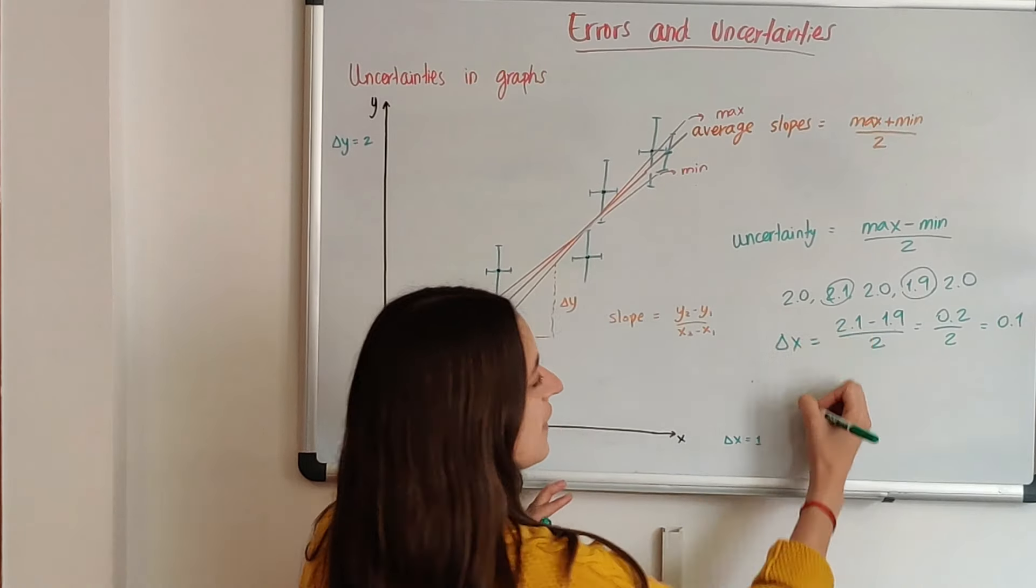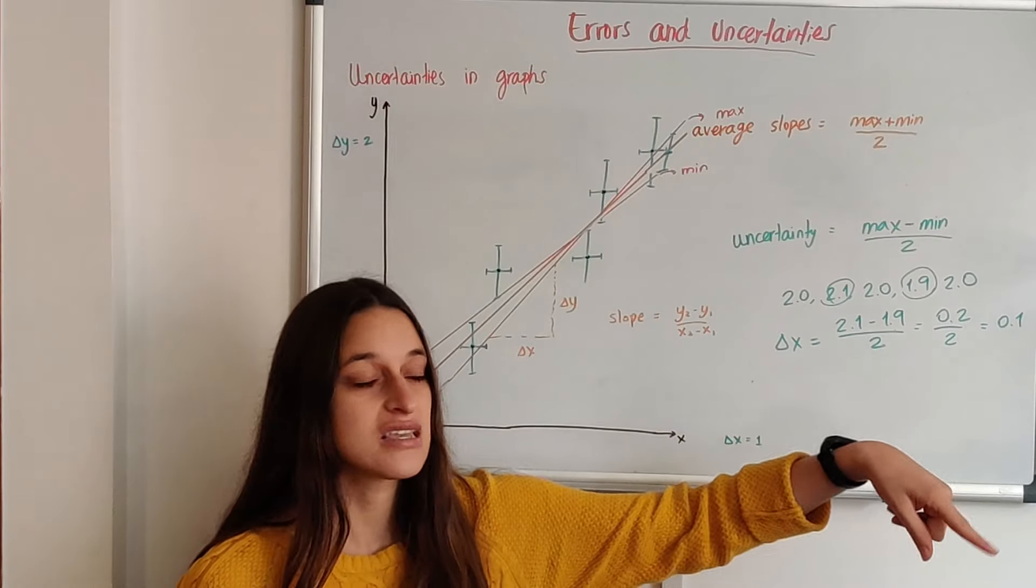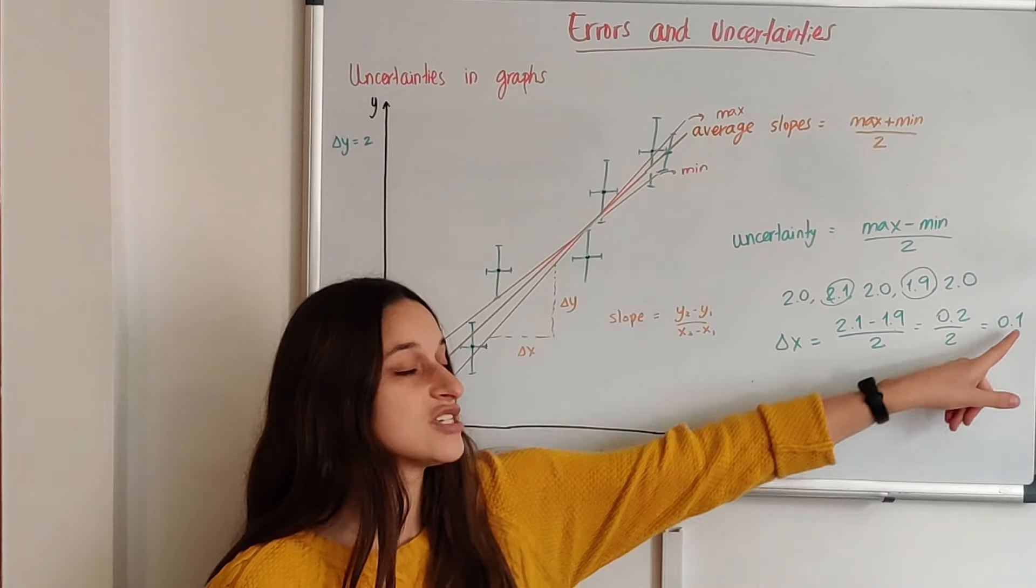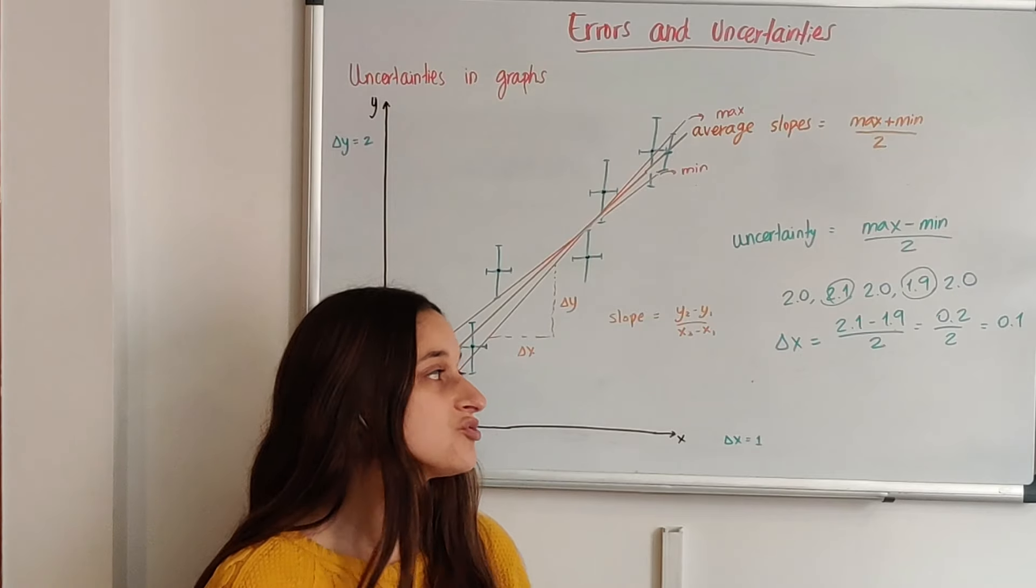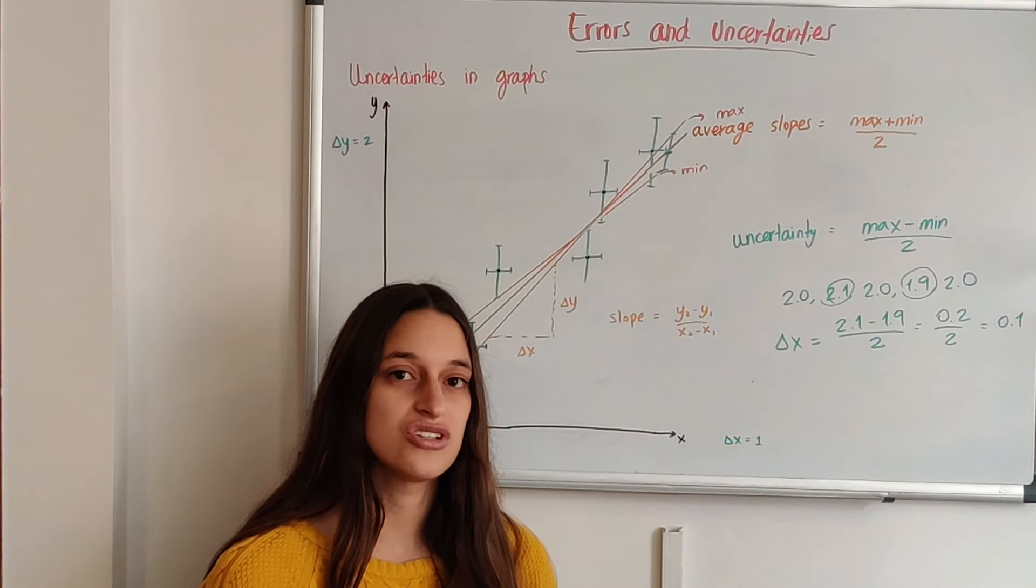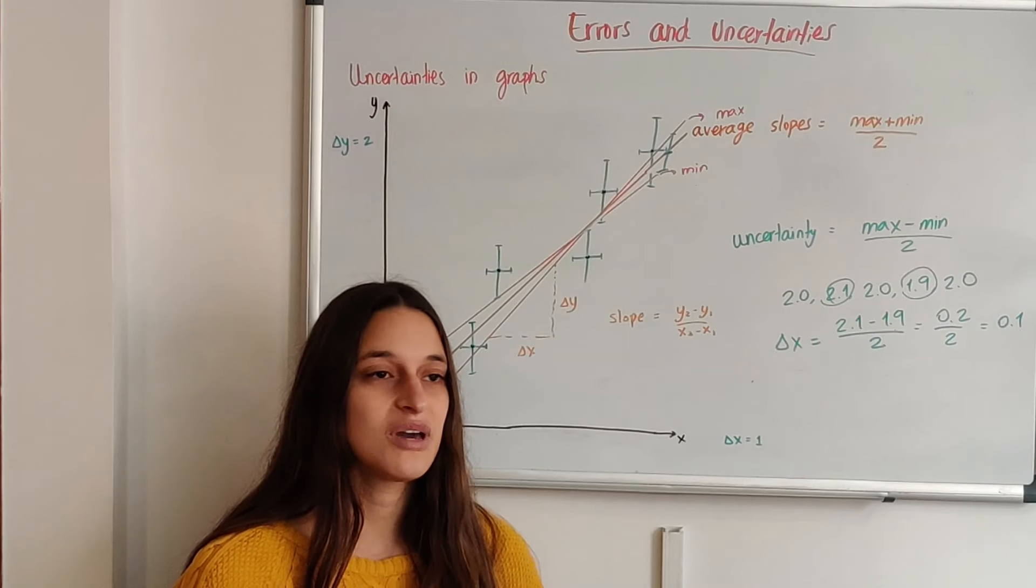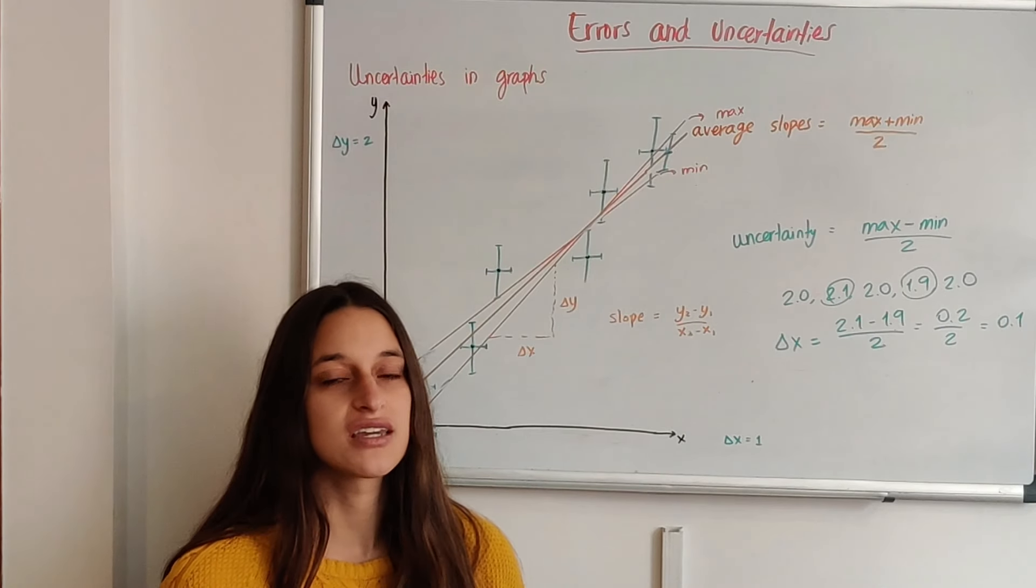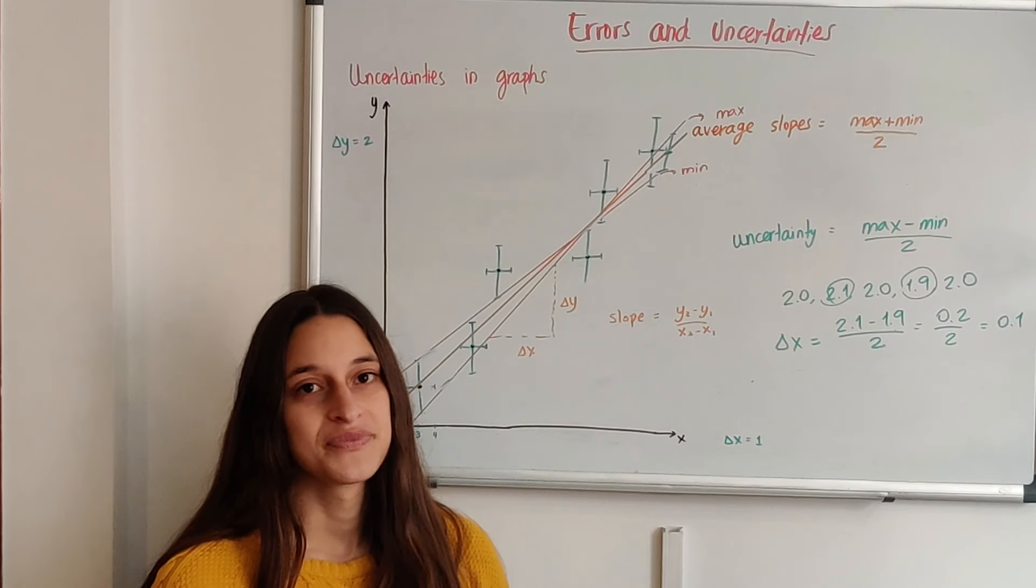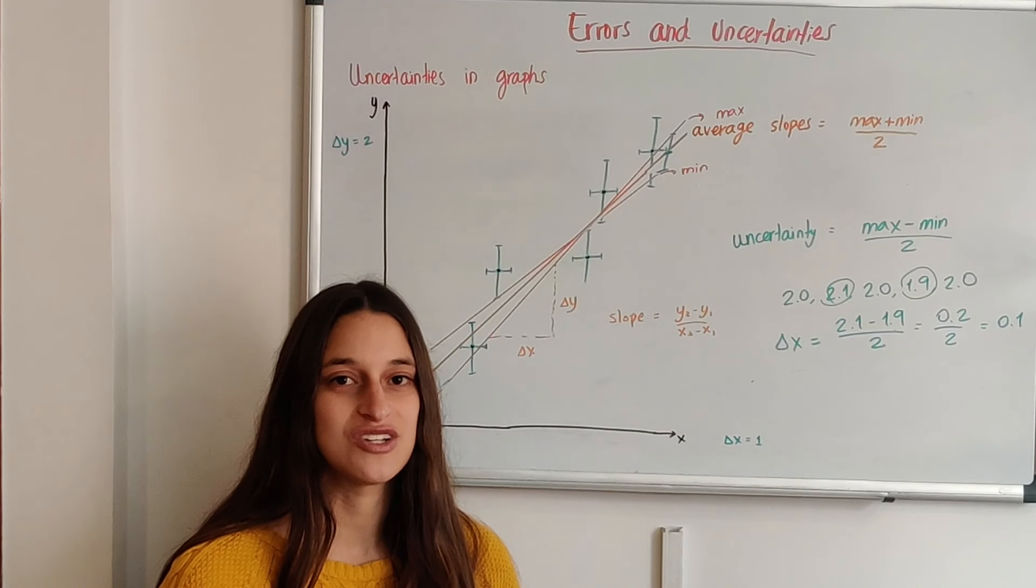So depending on which one is bigger, if the device's absolute uncertainty is bigger than the trial's uncertainty, then you use the device's. But if the trial's uncertainty is bigger than the device's uncertainty, then you use this one. So use the biggest uncertainty that you have, because it doesn't matter where you got it from, but if there are errors, if there's uncertainty, you have to take it into account when you're doing a graph. I hope this makes sense and leave any questions down below.